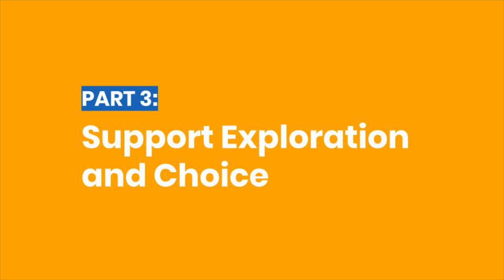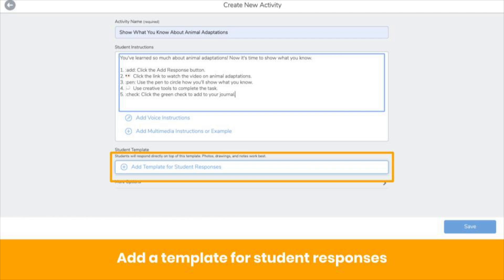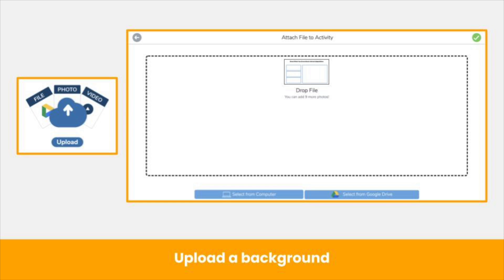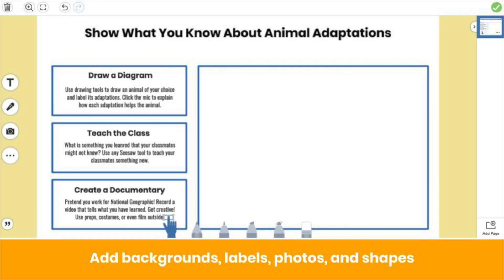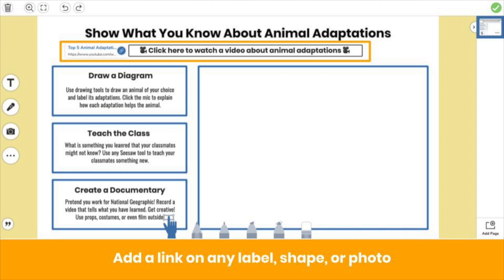This strategy is an effective way to support blended and remote learning environments. Pause the video to try it out. With Seesaw Activity Templates, you can also support exploration and choice in new and exciting ways. Again, create a new activity and click Add Template for Student Responses. Upload your background — here we're uploading a background for a choice board. We added the yellow background and labels that describe options students have to show what they know. You can also add links to the canvas — add a link to any label, shape, or photo so students can access the resources they need.